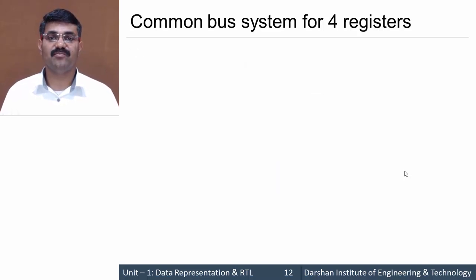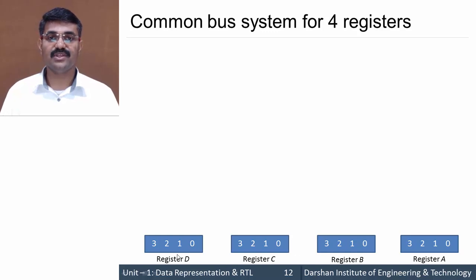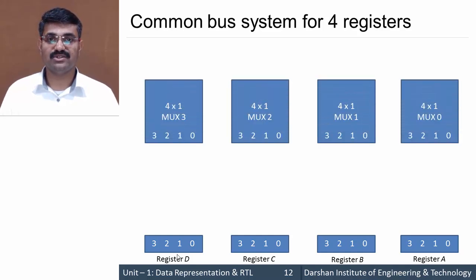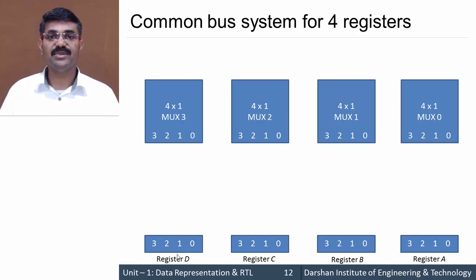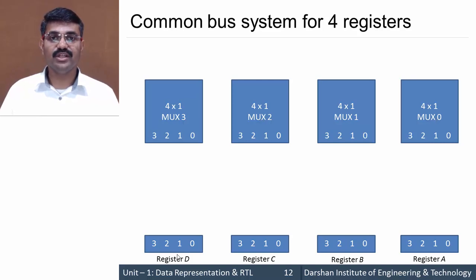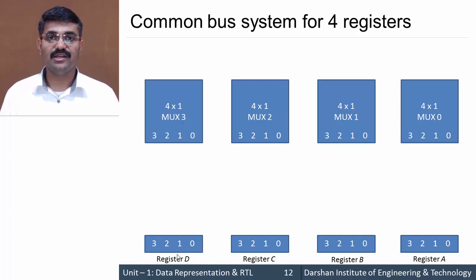For that we have one solution: the common bus system. Here we take an example of four registers — Register A, B, C, and D — each of four bits. For designing this system we require four multiplexers. We have taken multiplexers of size 4×1, meaning four inputs, one output, and two select lines. Each multiplexer requires four inputs, and we'll now see how each component is connected.